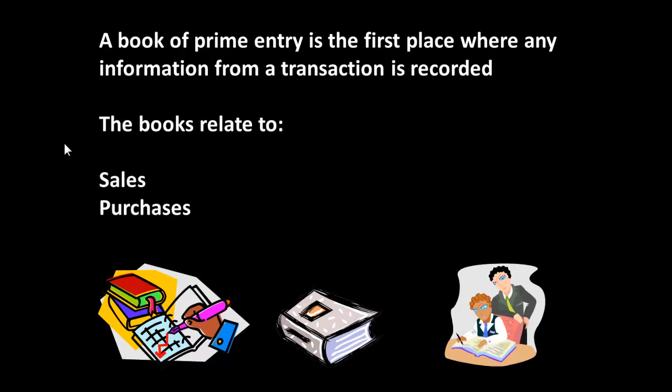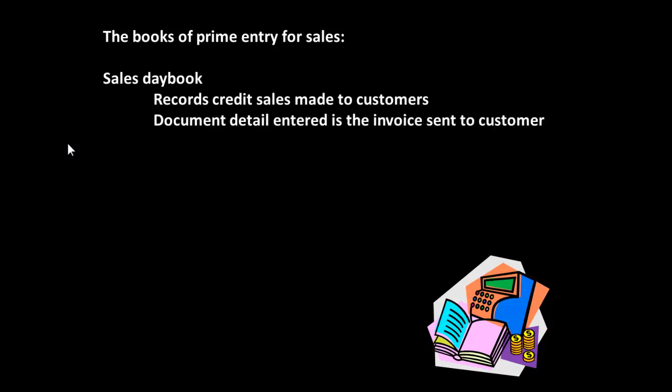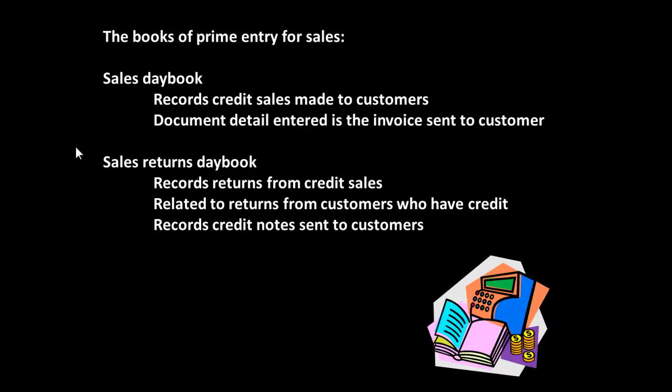So the books are going to relate to sales, they're going to relate to purchases and they're going to relate to any movement of cash in and out of the business. So we're going to have books for sales, books for purchases and a cash book. The books of prime entry for sales must include a sales day book which records the credit sales and it will enter detail from the invoice which is sent out to the customer. There will also be a sales returns day book and the purpose of this is to record any returns from credit sales, that means returns from customers who have credit, and it records the credit notes that are sent to customers.